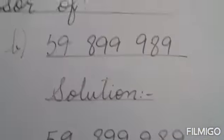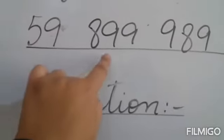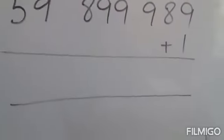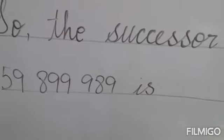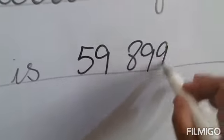Let us move to question number 2. The number is 59,899,989. To find the successor, we add 1. 9 plus 1 is 10, so we give 1 as carry. 8 plus 1 is 9. All other numbers will remain the same — no carry and no other number to add. So the successor of 59,899,989 is 59,899,990.